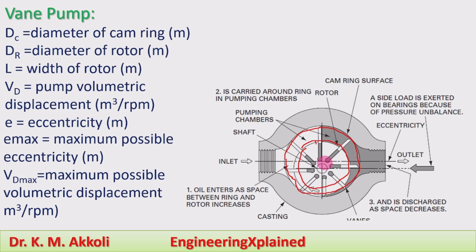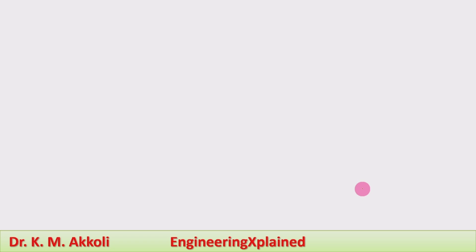The eccentricity is the distance between the centerline of the rotor and the centerline of the cam ring. This eccentricity can be varied. When the eccentricity is at its maximum value e_max, we obtain the maximum volumetric displacement Vd_max. Reducing that distance reduces the volumetric displacement.